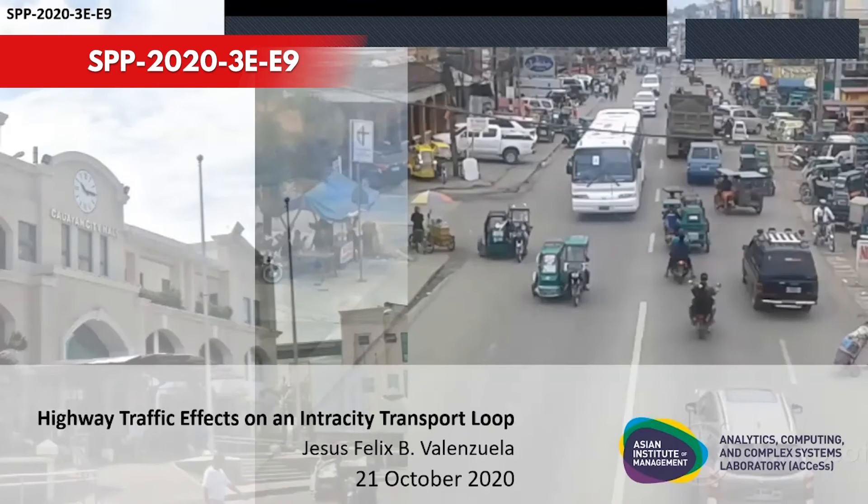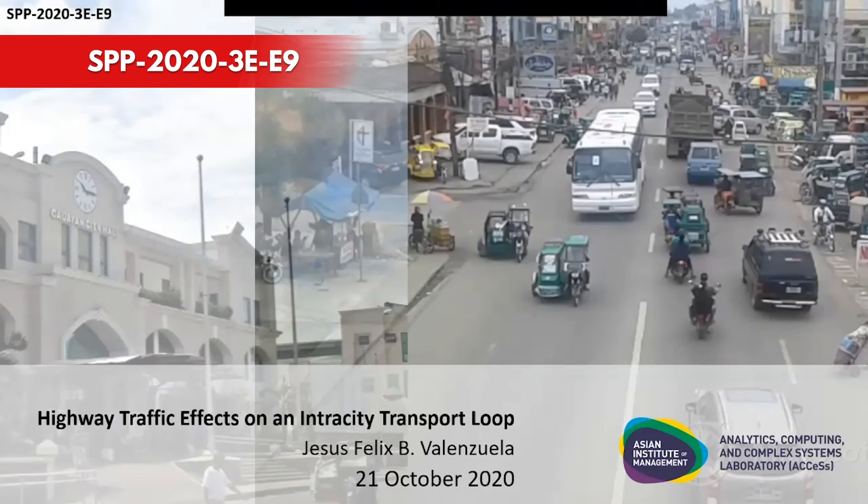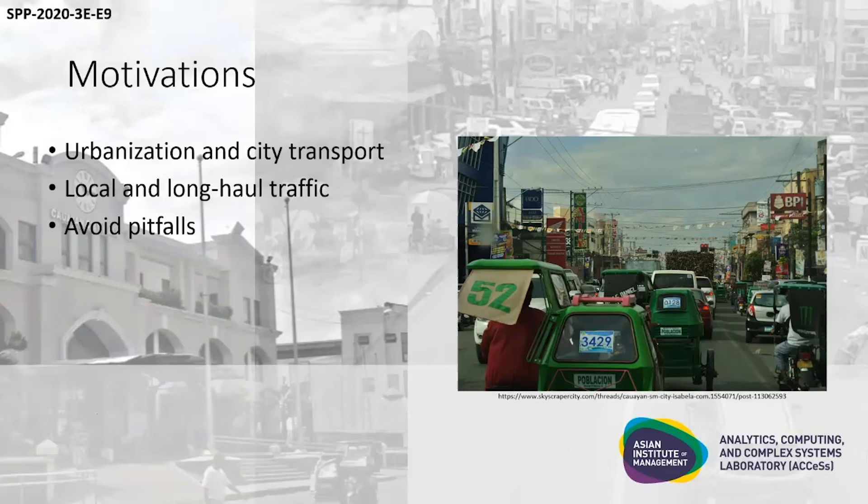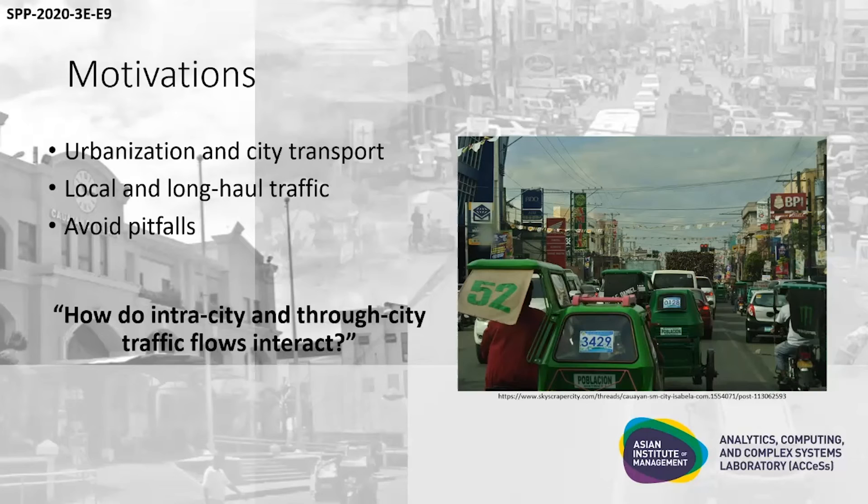Hi, I'm Felix from Access of AIM. I'm here to talk about highway traffic effects on an intercity transport loop. Developing cities need robust city transport. This is especially critical for those traversed by a major highway where vehicles on long-haul trips interact with within-city public transport. Our friends in Cauayan City have this issue. We want to avoid mistakes made by other cities way back. And for that, among the things we want to answer is, how do within-city and highway transport flows interact?